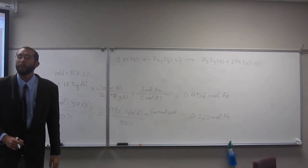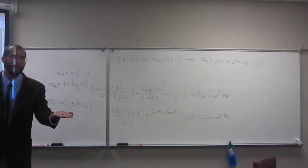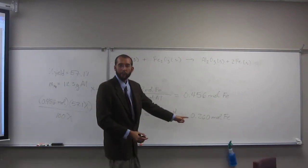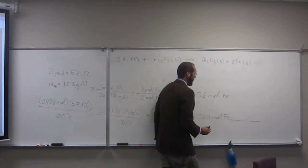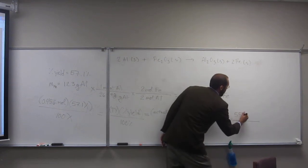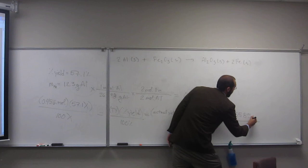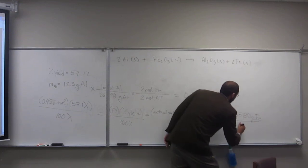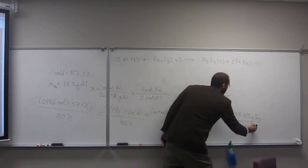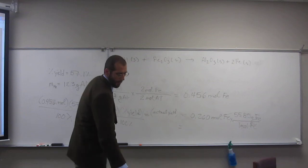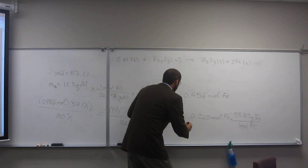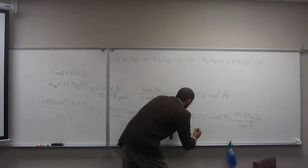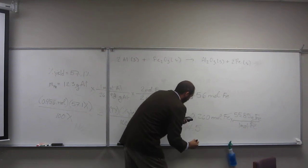But in the lab, it's probably best to talk about grams because that's what we're going to be weighing at the end, right? So we're going to convert this to grams at the end. How do we do that? Conversion factor. Yes, some sort of conversion factor, right? What is it called? The molar mass. So, how many grams of iron did we get? 14.5.